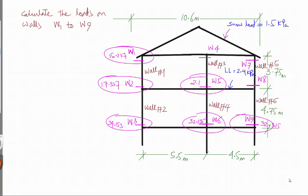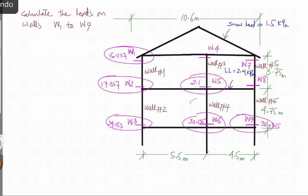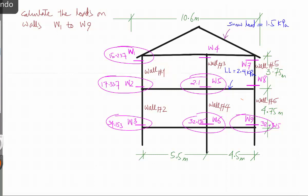In this session we will design the walls after we have calculated the loads. We need to design wall 1 using this load, wall 2 using this load — these are the exterior walls. Wall 3 will use this load, wall 4 will use this load. Wall 5 is the same as wall 1 because W1 and W2 are the same. For wall 6 I will use load 32.